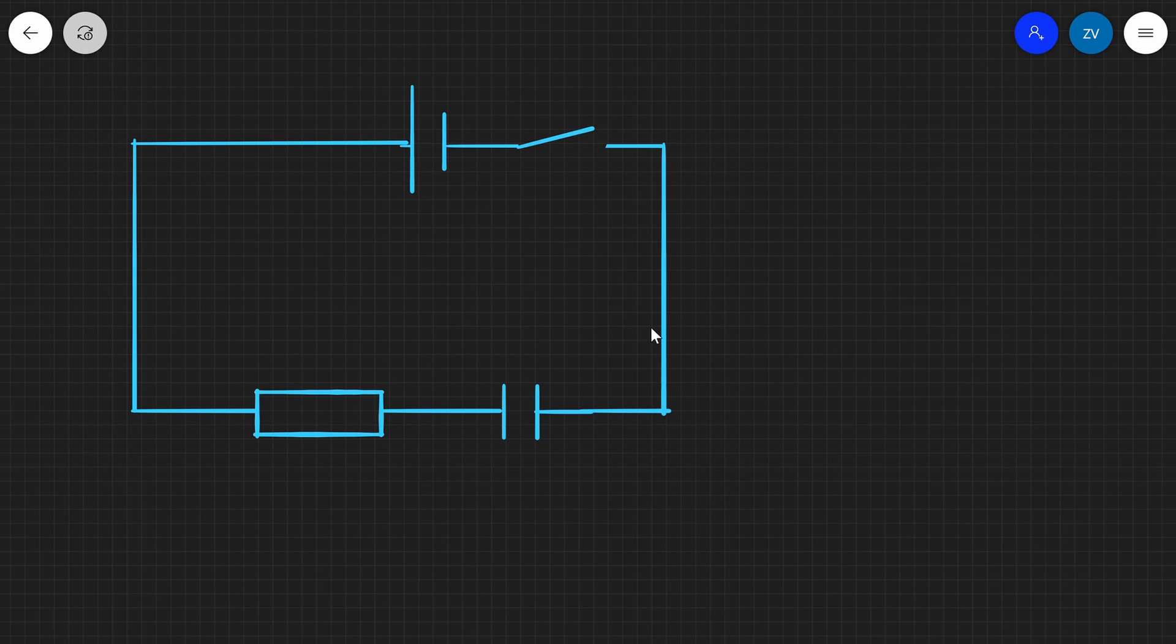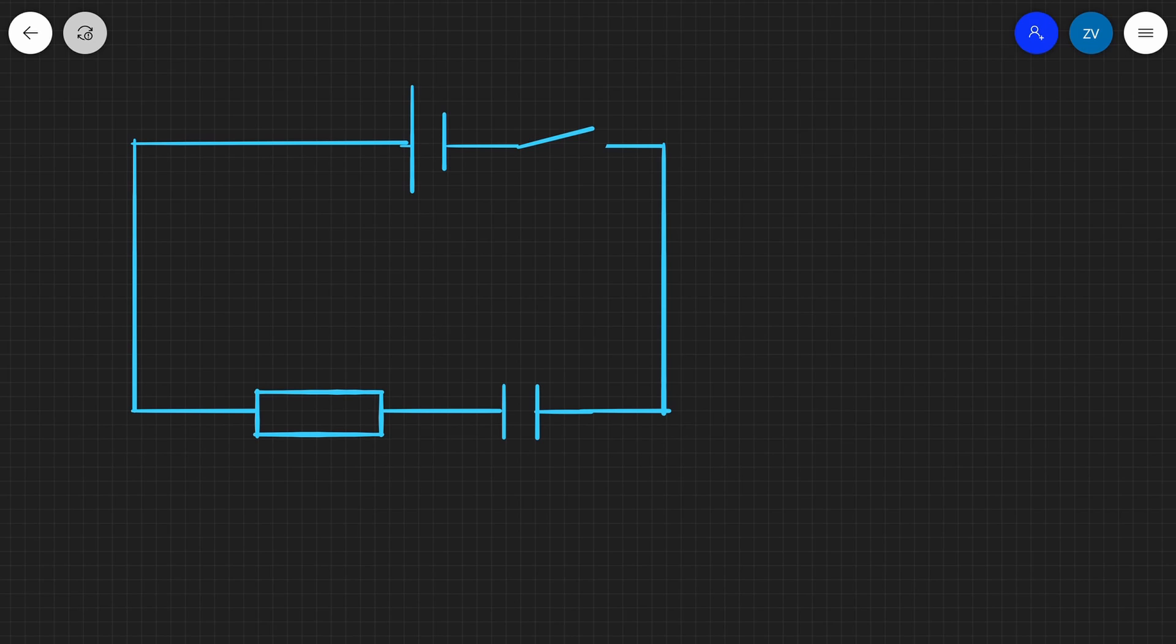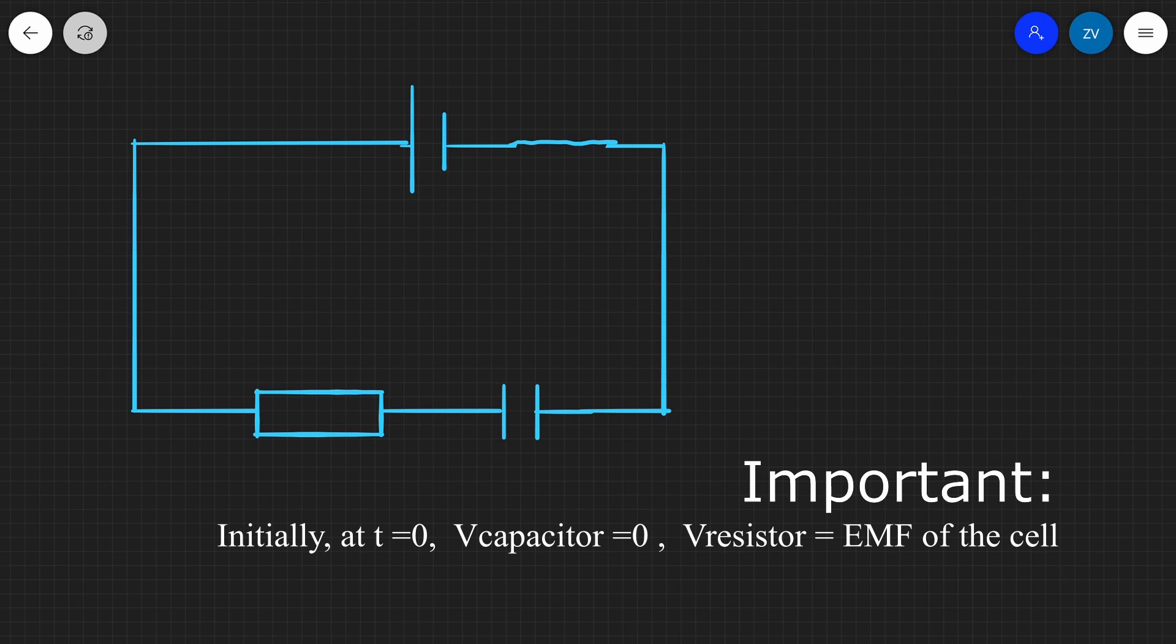Now the first thing that we would like to ask is what happens to the potential difference across the resistor and across the capacitor if we were to close this switch. So let's just go ahead and close the switch and draw this circuit like that. Now, immediately current is going to start flowing from positive to negative. So there's going to be some current I.